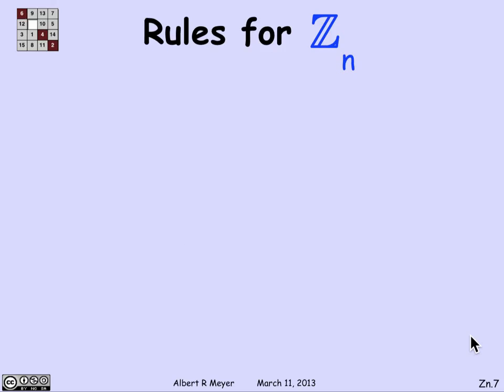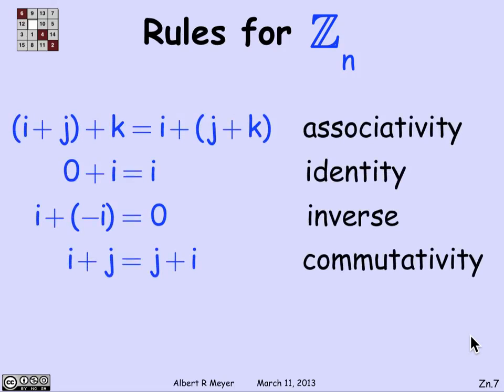Now, once you've got this self-contained system Z_n, you can start talking about algebraic rules that it satisfies, and now they hold with equality and they're pretty familiar. So let's look at some of the rules for addition that hold true in Z_n. First of all, addition is associative. i plus j plus k is i plus j plus k. We have an identity element, literally 0. 0 plus any i is i.